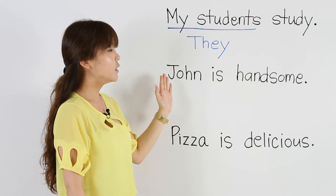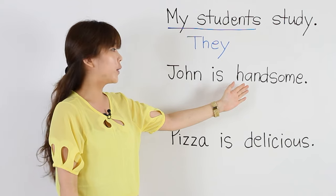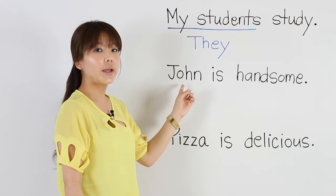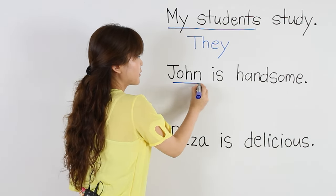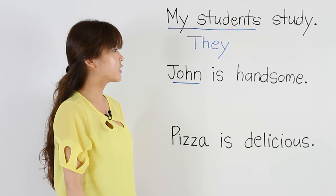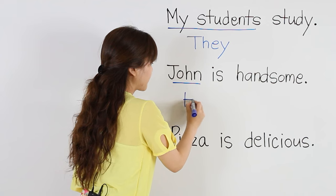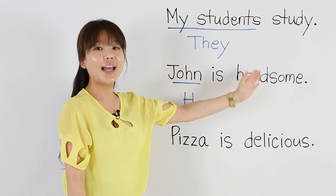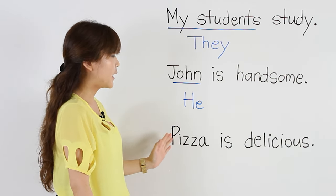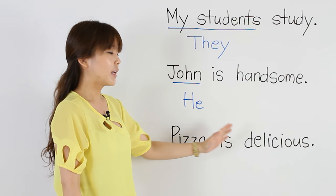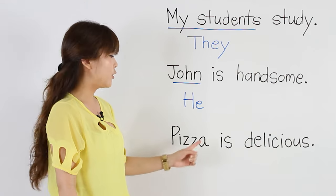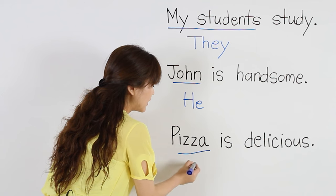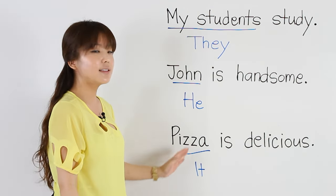The next example: John is handsome. John is a person, there's only one, and it's a boy, so what should we use? We have to use the subjective pronoun He. He is handsome. The last one: Pizza is delicious. Pizza is a thing and there's only one — no S, one pizza. We say It. It is delicious.